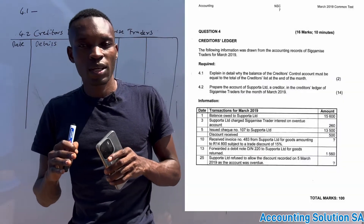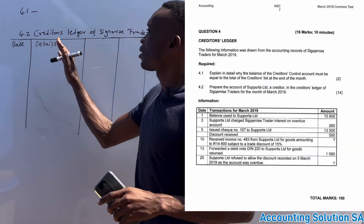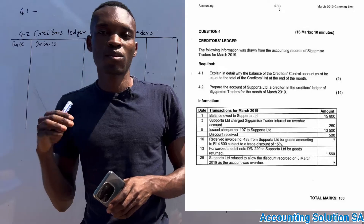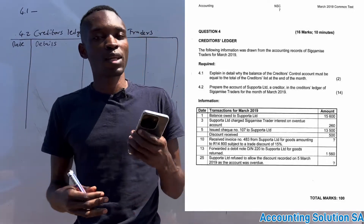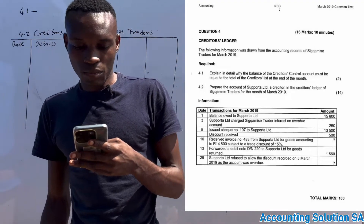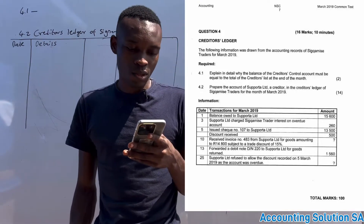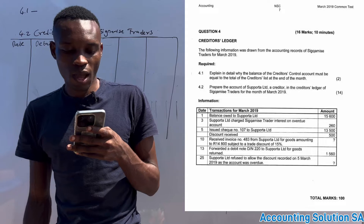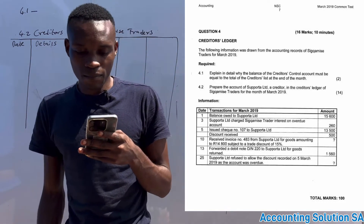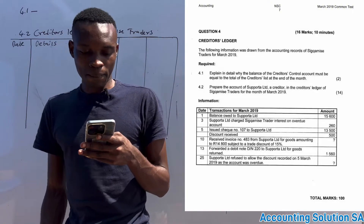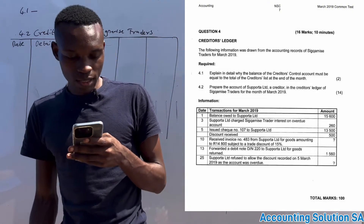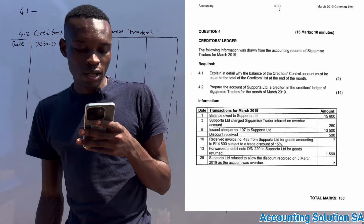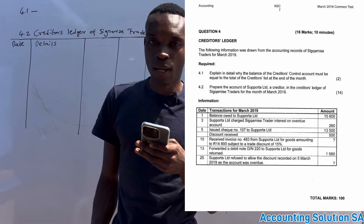In this video we are going to discuss a creditor's ledger account. Please stay tuned until the end so you can learn something and be able to write your test or examination. Looking at question 4, a creditor's ledger — the following information was drawn from the accounting records of Sinca Misa Traders for March 2019. Required number one: explain in detail why the balance of the creditors control account must be equal to the total creditors list at the end of the month.